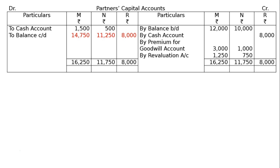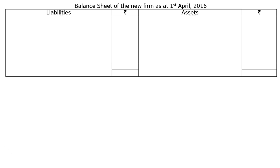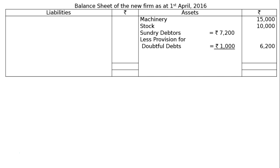Now the balance sheet of the new firm as at 1st April 2016. Starting from the asset side: stock at the new revalued value of Rs. 10,000; machinery revalued at Rs. 15,000. Sundry debtors Rs. 7,200, less provision for doubtful debts Rs. 1,000, giving net debtors of Rs. 6,200.